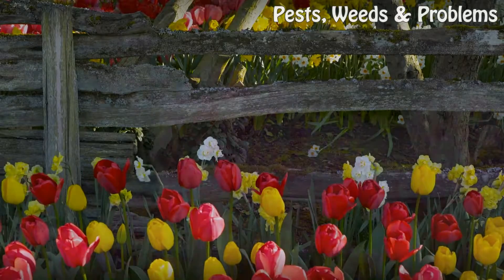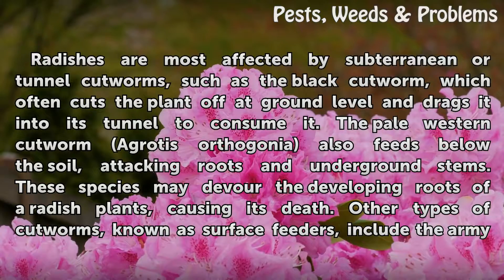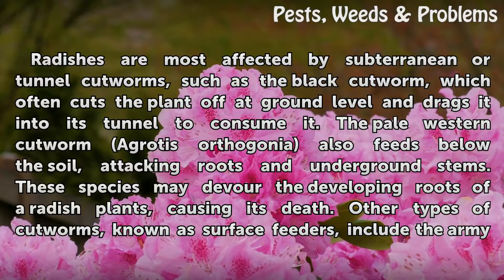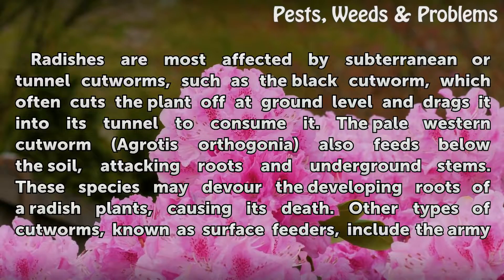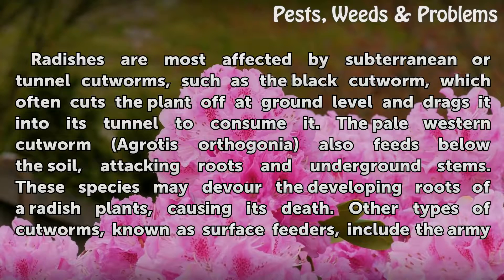Damage: radishes are most affected by subterranean or tunnel cutworms, such as the black cutworm, which often cuts the plant off at ground level and drags it into its tunnel to consume it. The pale western cutworm (Agrotis orthogonia) also feeds below the soil, attacking roots and underground stems. These species may devour the developing roots of a radish plant, causing its death.